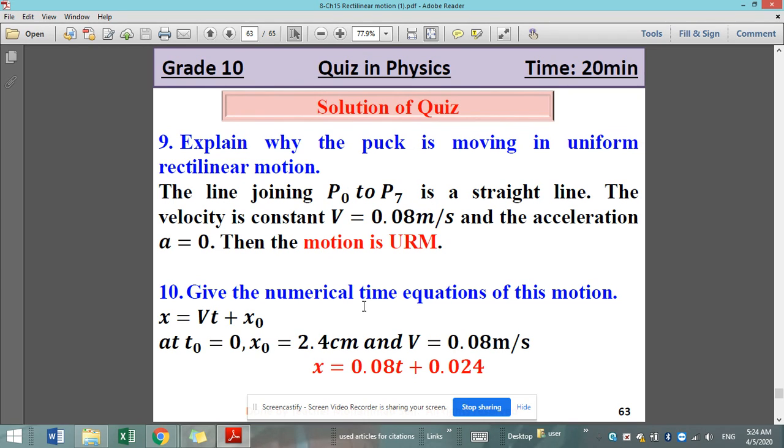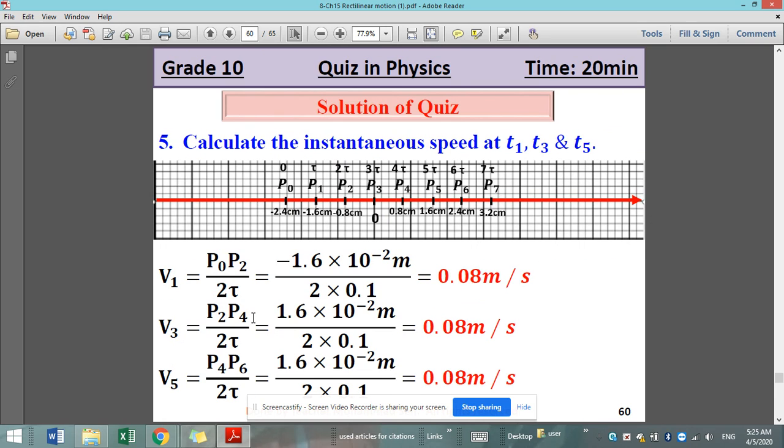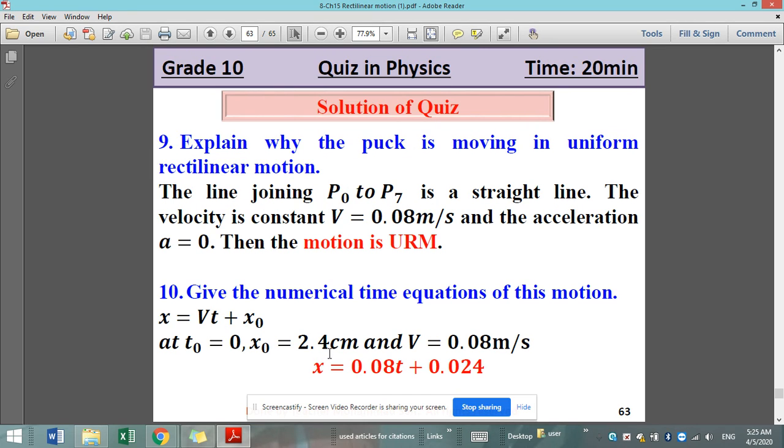Give the numerical time equations of this motion. We know that for URM there is only one time equation that relates the position to the speed. It is X equals VT plus X0. V is constant, calculated to be 0.08. And the initial position X0 is not 0 this time because it is equal to minus 2.4 with respect to the origin. So X0 is minus 2.4 centimeters and V equals 0.08 meters per second. X0 must be written as minus. There is a mistake here. So it is minus not plus.